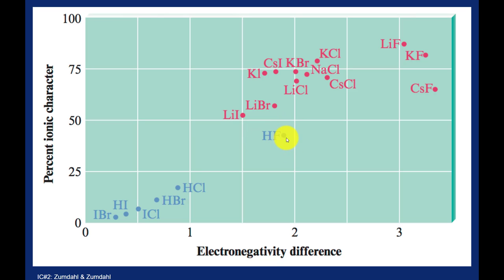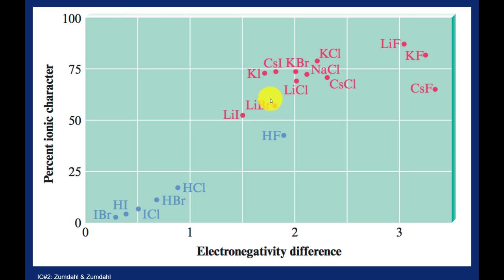Hydrogen fluoride is right up next to the electronegativity difference of 2. Hydrogen has an electronegativity of 2.1 and fluorine has 4.0, so the electronegativity difference is 1.9. Hydrogen fluoride was an example of a very polar but still covalent bond that we talked about previously. The interesting ones here are things like potassium iodide, lithium bromide, and lithium iodide. If you look at their differences in electronegativity, these bonds are actually less polar than hydrogen fluoride.